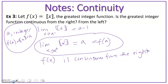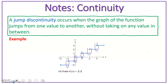Now, if we look at it graphically, if we jump backwards and we see here this is in fact our greatest integer function, we can see that it makes sense that if we come from the right, we have this continuity. We see that there are no holes and that it is defined on the right-hand side, whereas on the left, it is not.